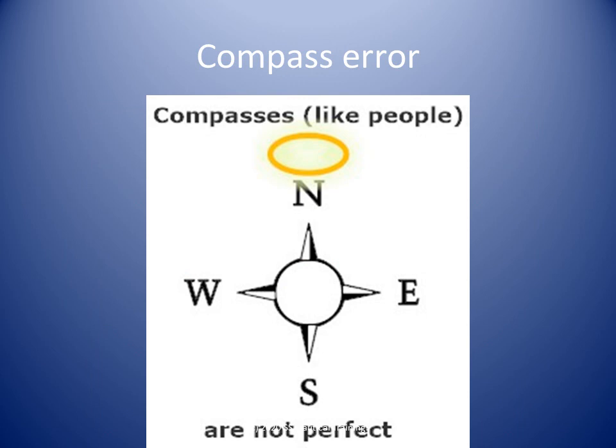Direction on nautical charts is referenced on the true or geographical north pole. Direction on the ship's compass is referenced on the magnetic north pole. The difference between the true direction and the compass direction is called compass error. Ships must have means of correcting compass heading and bearings to true at all times.